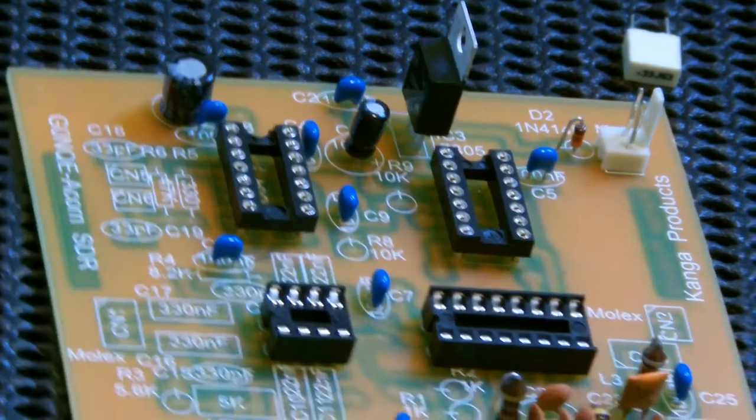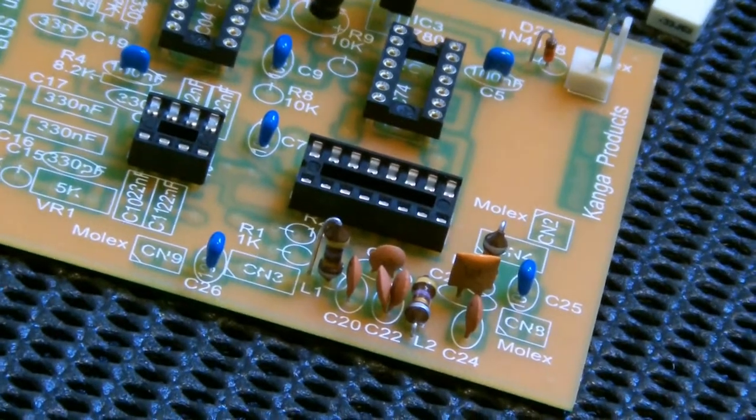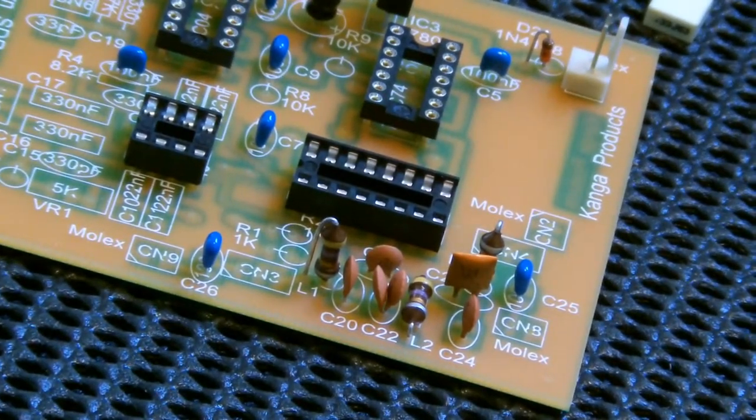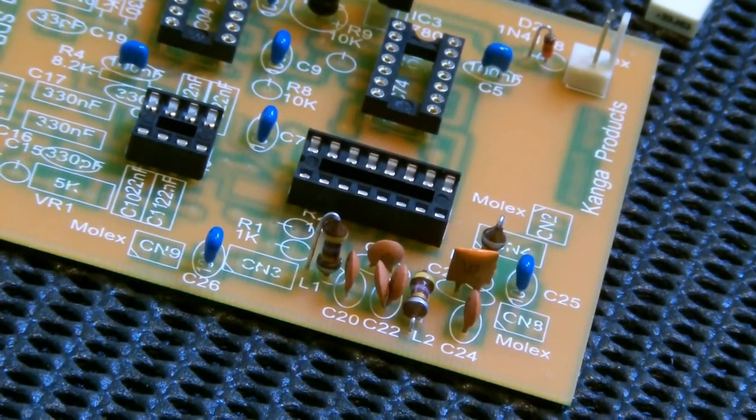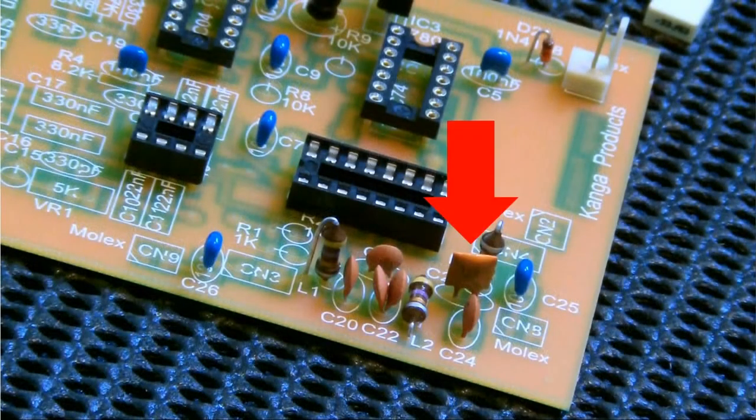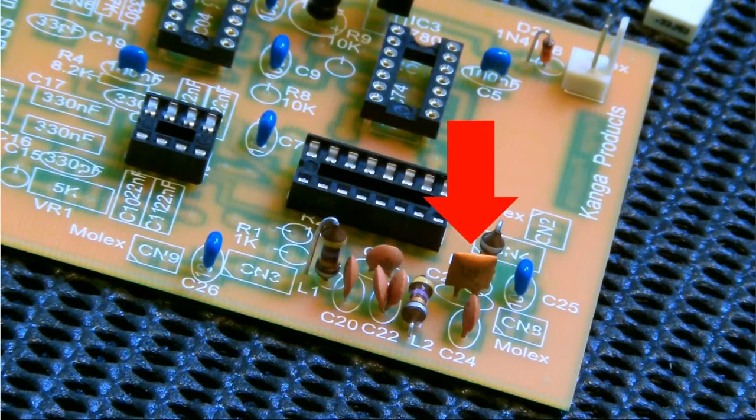I had a 100 picofarad capacitor missing, so I substituted one from my component drawer because I had one ready to hand. Missing parts is quite a common problem with kits, so if this happens to you, get in touch with your kit supplier to get a replacement.